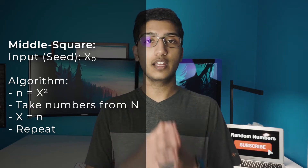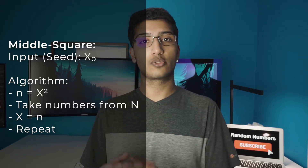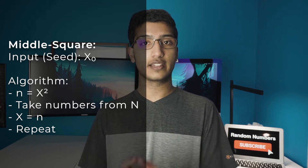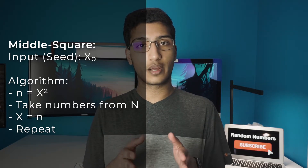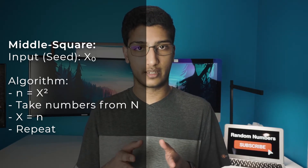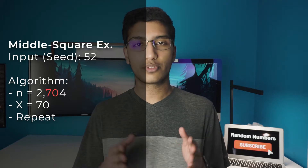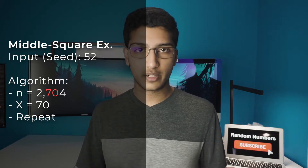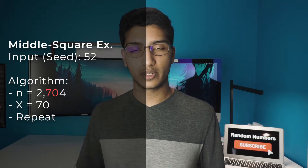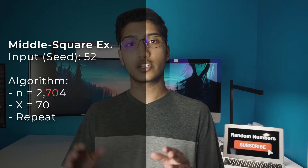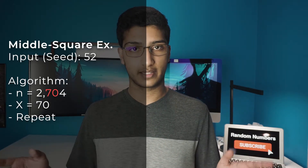There are two common algorithms used to generate pseudo-random numbers. The first is the middle square algorithm made by John von Neumann, which takes an input, squares it, and then takes the middle numbers — these can be two, three, or four middle numbers, anything you want.